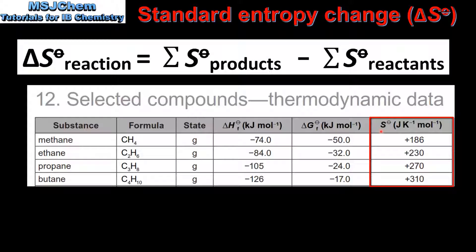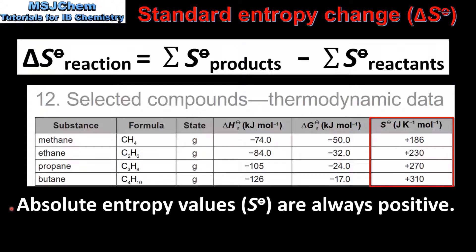Table 12 of the IB Chemistry Data Booklet has absolute entropy values for a range of different substances. The first point to note is that absolute entropy values are always positive, and the second is that the unit of absolute entropy is joules per Kelvin mole.